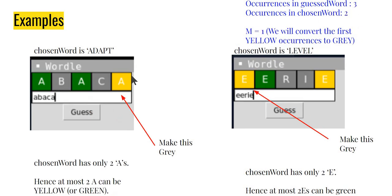For the third case, three in the guess and two in the chosen word, m equals one. Say I guessed 'abaca' for chosen word 'adapt' — both the A's at the right positions are green, and my first yellow A gets converted to gray because there can be at most two greens. The third A being gray is exactly right. The best part is I don't need to look at all other letters — just find whether this is the first yellow occurrence, and make it gray. Similarly for 'level' versus 'eerie' — three E's in the guess, two in the chosen word — I make the first yellow E gray, leaving one green and one yellow E, which is correct.